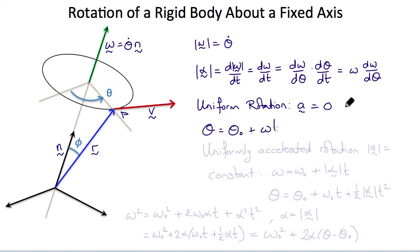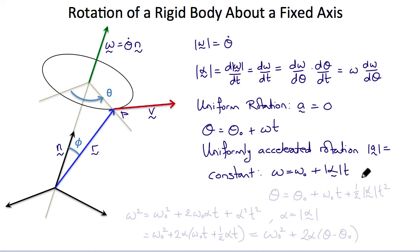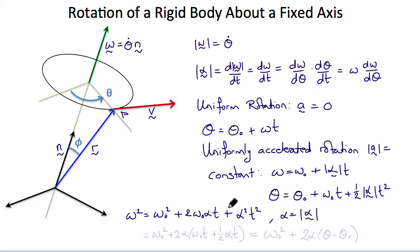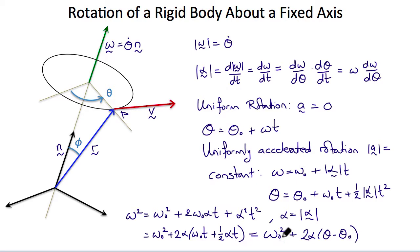A special case would be uniform rotation in which the acceleration is zero, for example θ equals θ_0 plus ω t. A uniformly accelerated rotation with constant acceleration could be omega equals ω_0 plus alpha times t, which means θ equals θ_0 plus ω_0 t plus one half alpha t squared. And taking the square of omega, we get omega squared equals ω_0 squared plus 2 alpha times (θ minus θ_0), where alpha is the magnitude of the acceleration vector.